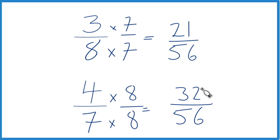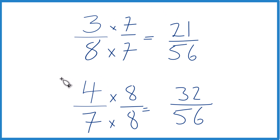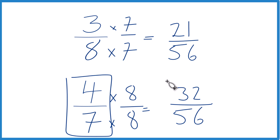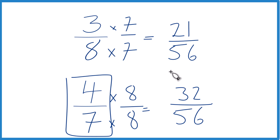Now we have the same denominator, so we just compare the numerators. 32 is greater than 21, so 32 over 56 is greater than 21 over 56. These are equivalent fractions, so 4 sevenths is greater than 3 eighths. We can tell exactly how much bigger: 32 minus 21 is 11, so 4 sevenths is 11 over 56 bigger than 3 eighths.